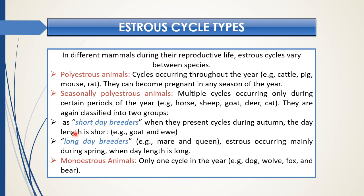The other group belongs to long-day breeders, like mares and queens, where estrus occurs mainly during spring when the day length is long. Another category is monoestrous animals, in which only one cycle occurs in the whole year — examples include dog, wolves, fox, and bear.